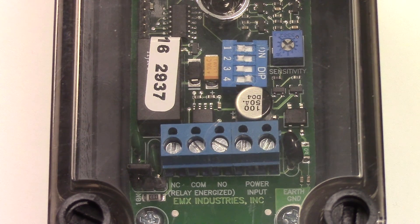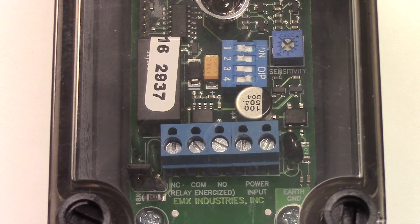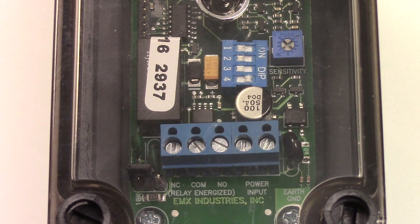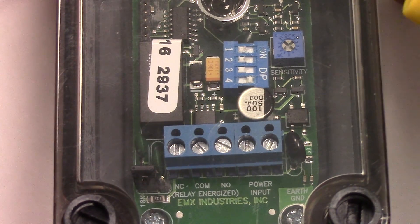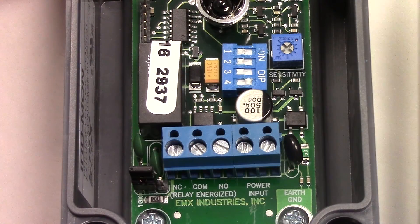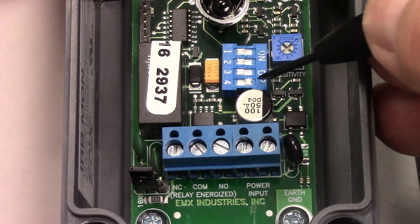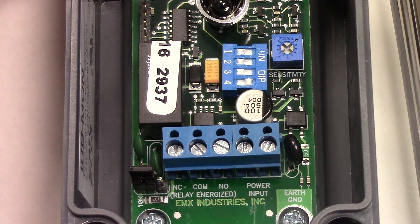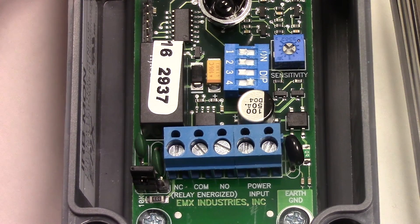This is a demonstration of the setup for the IRB MON through beam photo eye from EMX. This is the receiver and inside the receiver we have a four position dip switch that allows us to select the various monitoring options.